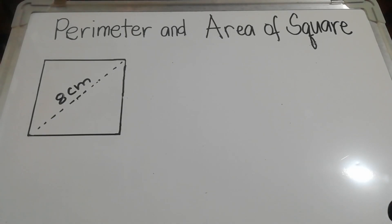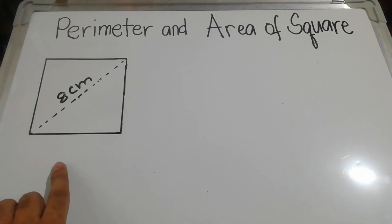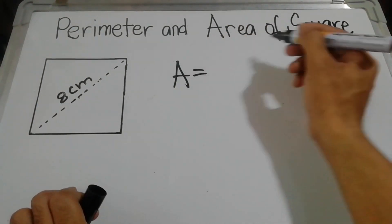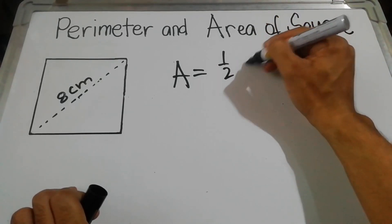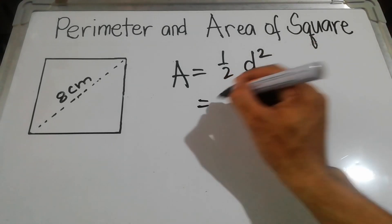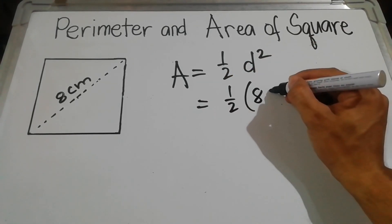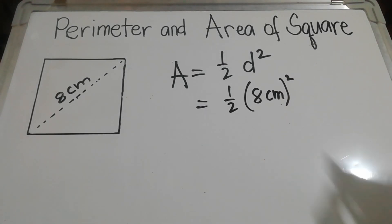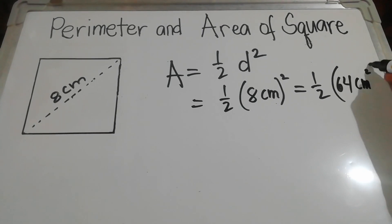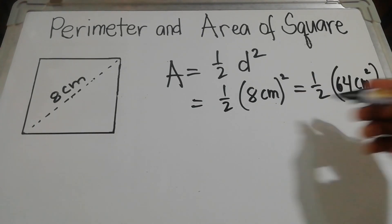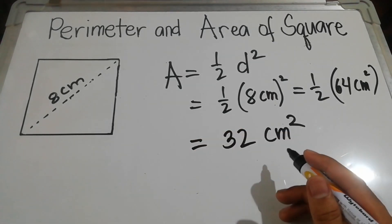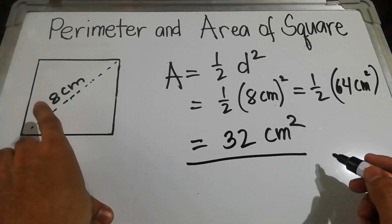What if the given is the length of the diagonal of the square — for example, 8 centimeters? We use the formula for area given the diagonal: A = one half d squared. Since the diagonals of a square are equal, we use d squared. So A = one half times 8 centimeters squared = one half times 64 square centimeters. 64 divided by 2 equals 32 square centimeters. So the area is 32 square centimeters.